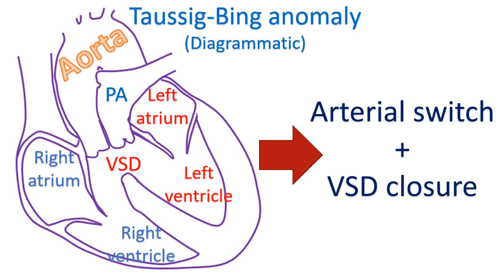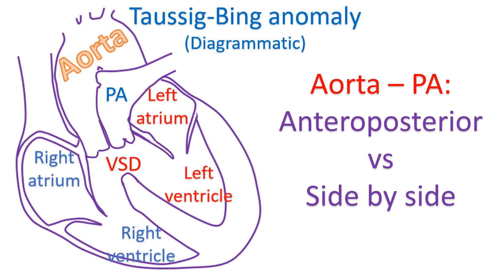One strategy for surgical correction is arterial switch plus closure of ventricular septal defect. Massimo Grisele et al. operated on 33 patients, of which 25 underwent single stage correction. There were 3 early and 1 late deaths. Two early and 4 late re-operations were needed. Great artery relationship was anteroposterior in 19 cases and side by side in 14 cases.